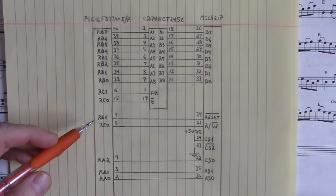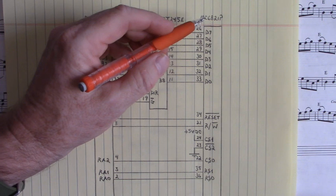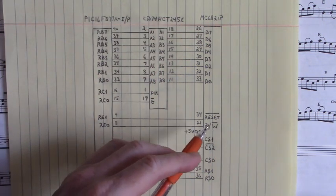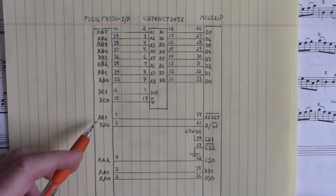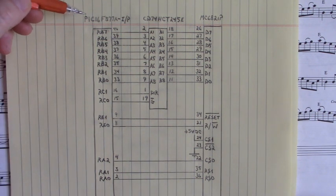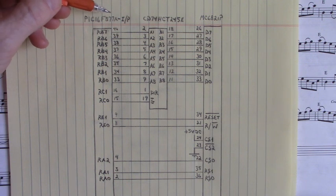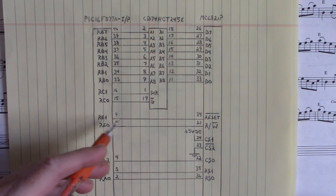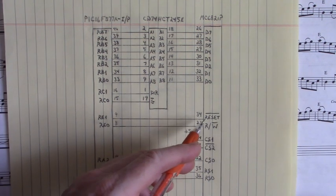Now down here, on the MC6821P, pin 34 is reset. That's connected to port E1, pin 9, on the PIC16F877A. So we have port E1, pin 9, connected to pin 34, which is reset bar.